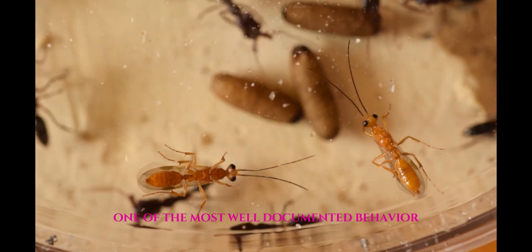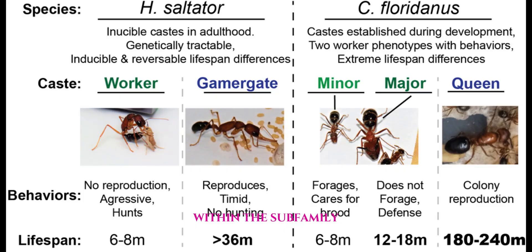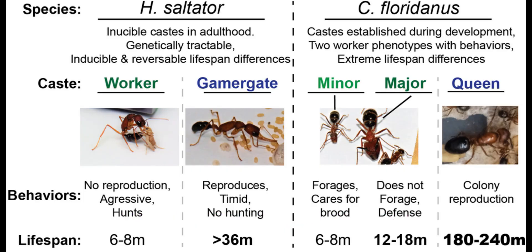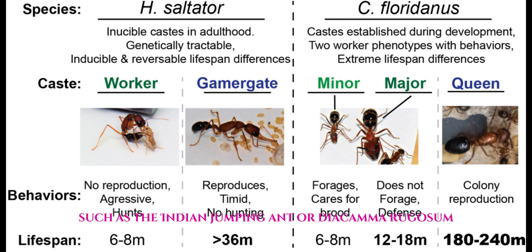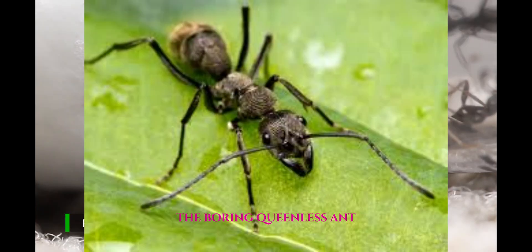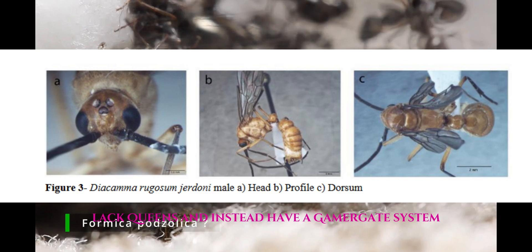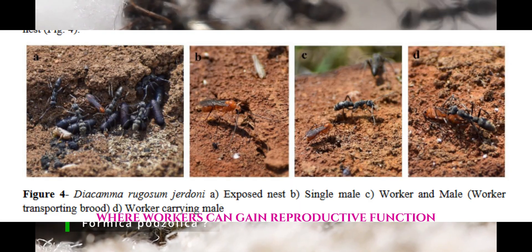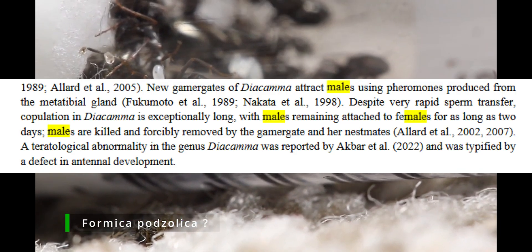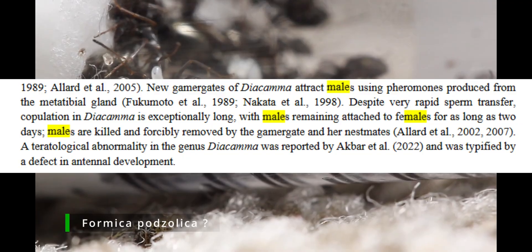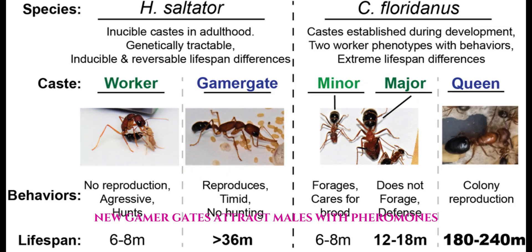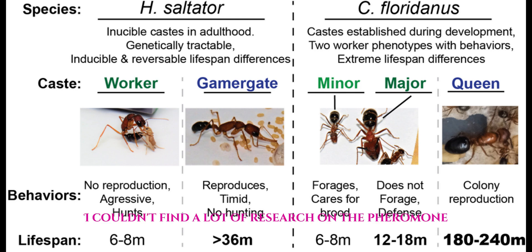One of the most well-documented behaviors within this subfamily is remarkable reproductive plasticity. Some species, such as the Indian jumping ant or Diacamma rugosum, the Bornean queenless ant, lack queens and instead have a gamergate system where workers can gain reproductive function. New gamergates attract males with pheromones who come into the nest to mate. However, I couldn't find a lot of research on the Ponerine males.